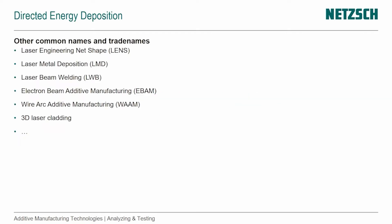Trade names that are used include: Laser Engineering Net Shape (LENS), Laser Metal Deposition (LMD), Laser Beam Welding (LBW), Electron Beam Additive Manufacturing (EBAM), Wire Arc Additive Manufacturing (WAAM), and 3D Laser Cladding.